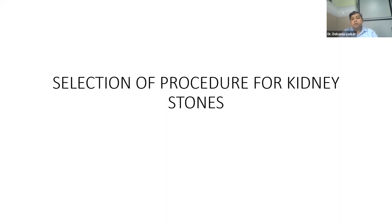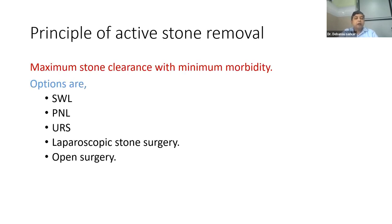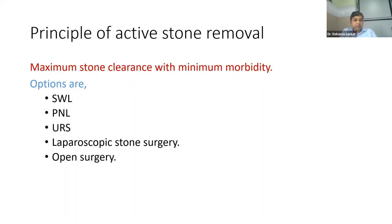Once you have decided this patient needs stone surgery for the kidney, how do you decide which patient needs what? Our goal of treatment is maximum relief with minimum morbidity. You need to know the armamentarium available: SWL — extracorporeal shockwave lithotripsy — PCNL (percutaneous nephrolithotomy), URS (ureteroscopic lithotripsy), laparoscopic stone surgery, and open surgery. Open surgery, which was common in our student days, has now gone to fifth position because of endourological advancements.